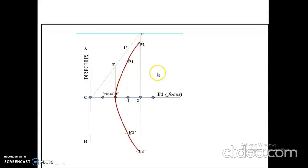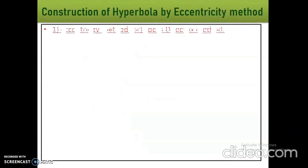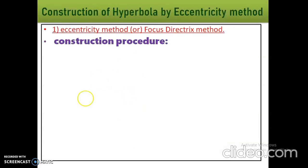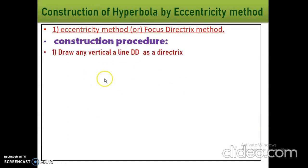After constructing the hyperbola, the answer will look like this — a hyperbola shape, a radicular shape. This is an open curve. Let us see the construction procedure of hyperbola by using the focus directrix method or eccentricity method.